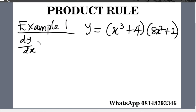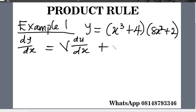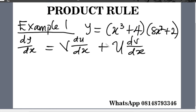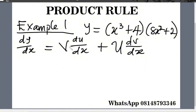The first thing is to write down the formula for product rule: dy over dx equals v du/dx plus u dv/dx. When given a question like this, first write down the formula and then identify the terms.